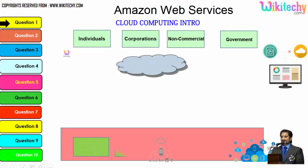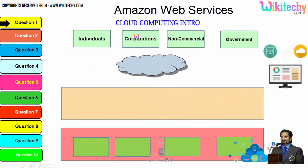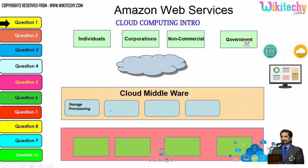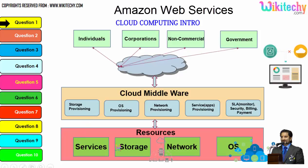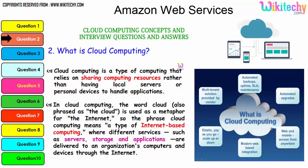There are different types of users: individuals, corporations, non-commercial people, and government. From any of these, users are able to access services, storage, networks, or operating systems via cloud middlewares. These are specialized software provided by the cloud service provider to give end users access to resources. This is how the cloud computing architecture works.